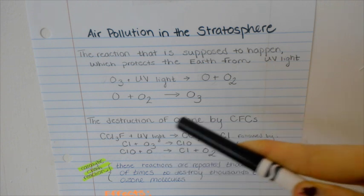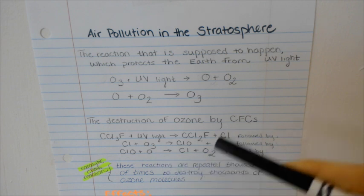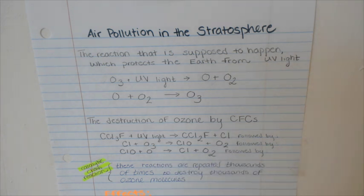This chlorine atom continues breaking up ozone. The technical name for this reaction is a catalytic chain reaction, which is repeated thousands of times to destroy thousands of ozone molecules. In fact, one chlorine atom can destroy 100,000 ozone molecules.